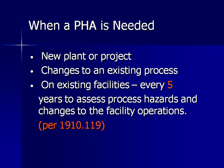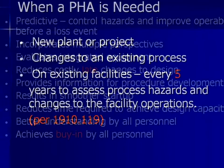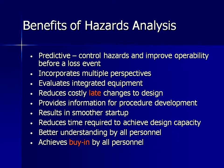When is a process hazard analysis needed? It's needed for a new plant or project, for changes to an existing process, and on existing facilities every five years to assess process hazards and changes to the facility operations, per OSHA 1910.119. A proper PHA evaluation will collectively focus the design, operating and safety teams to review hazards, incorporate input and perspective, and develop stronger safeguards and procedures to prevent accidents.